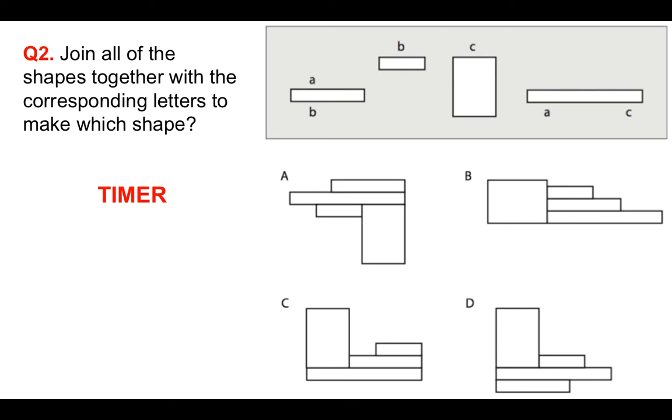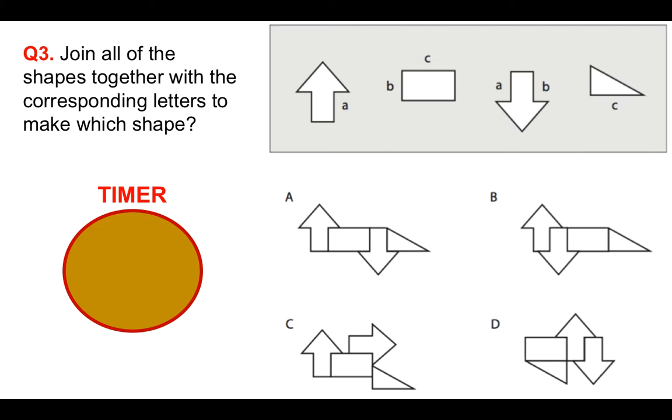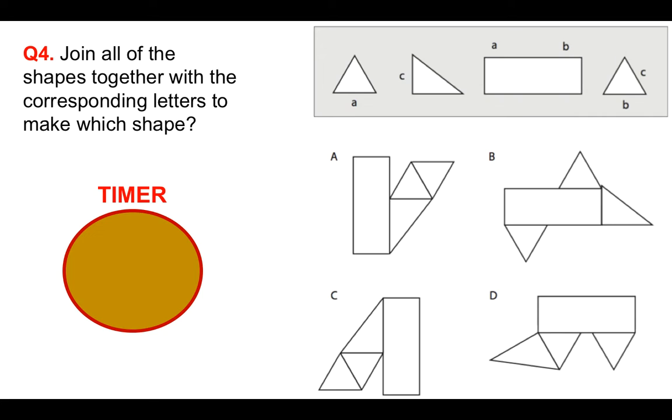So you're halfway through now. Put your answer to question two in the comment section below. We're going to look at a different type of spatial reasoning question in a second, but still three more to do for you. So this one's a little bit more tricky, a bit more fun. Again, you've got 15 seconds. Join all of the shapes together with the corresponding letters to make which shape. Some of you will have been able to work this out straight away with the arrows. They have to be together, and there is only really one option straight away. Question number four. Again, 15 seconds.